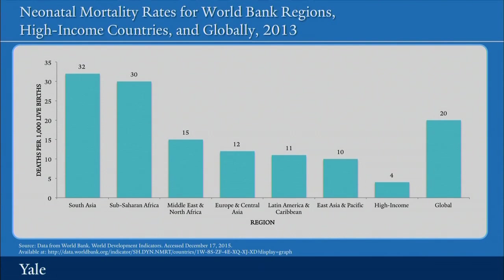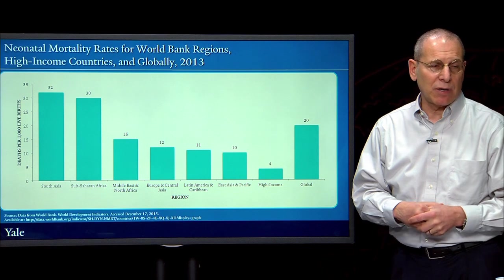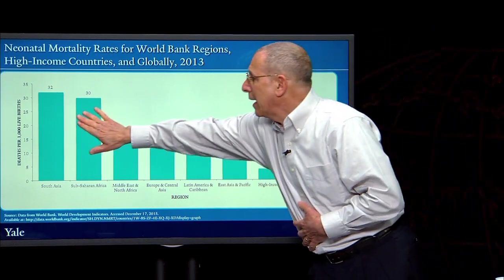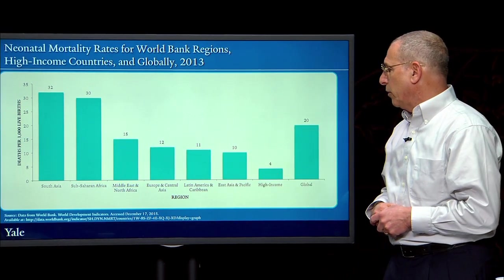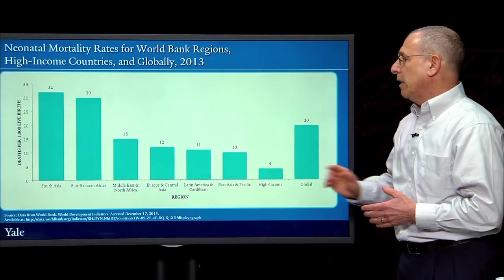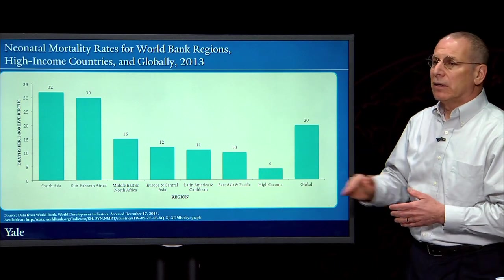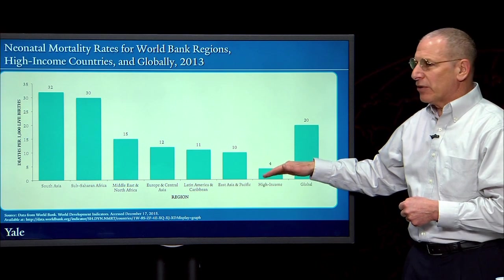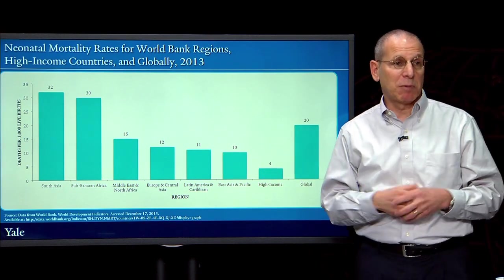Exactly as Vivek said, we see a pattern not so different from the maternal mortality ratio — eight times the rate of neonatal mortality in South Asia and seven and a half times in sub-Saharan Africa compared to high-income countries. Again, in principle, deaths above the level seen in high-income countries ought to be preventable.